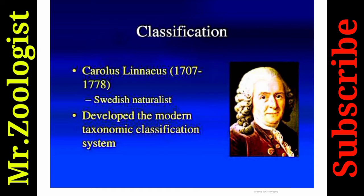Classification was first introduced by Carlos Linnaeus, who was known as the father of taxonomy or classification. From 1707 to 1778 were his birth and death dates. This Swedish naturalist developed the modern taxonomic classification system, called binomial nomenclature.